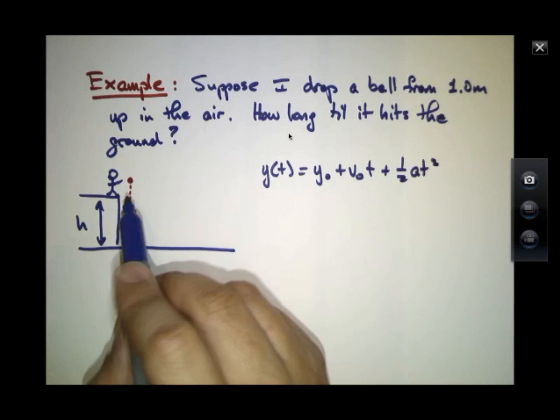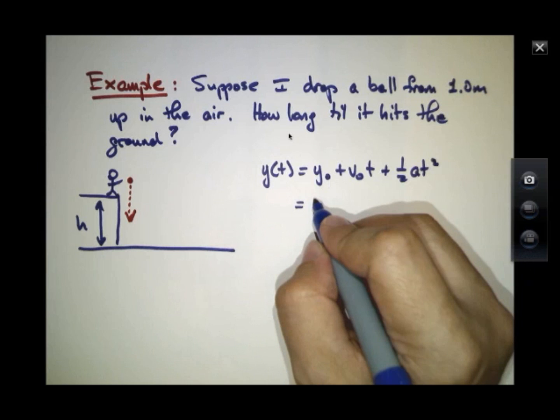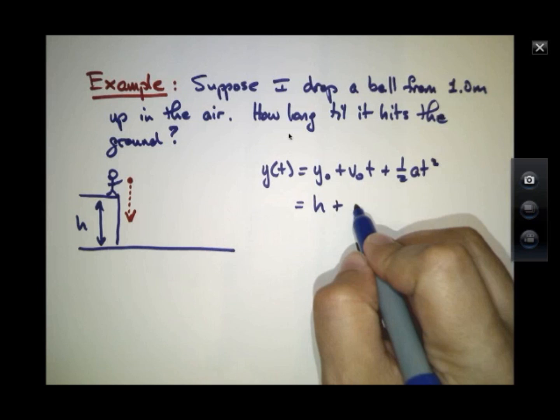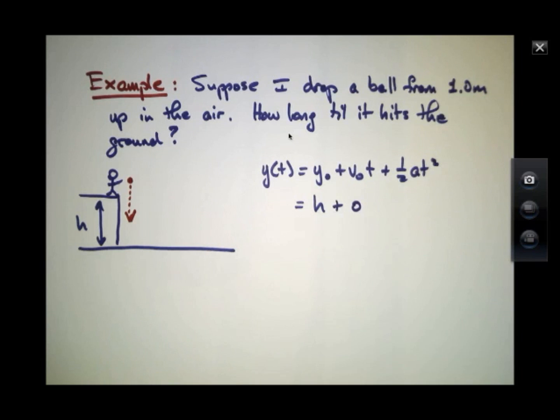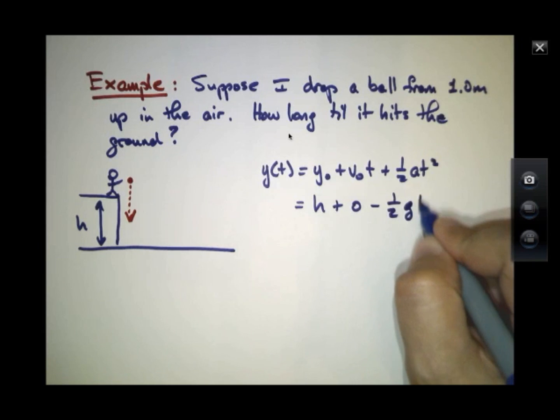And I have to start putting in some of these initial conditions. At time t equals 0, I'm letting the ball go from up here. So that value of y0 should equal h. That's the height, that 1 meter, that I'm going to drop it from. If I just let the ball go and I don't throw it down, then the initial speed is 0. And the acceleration here is minus g.